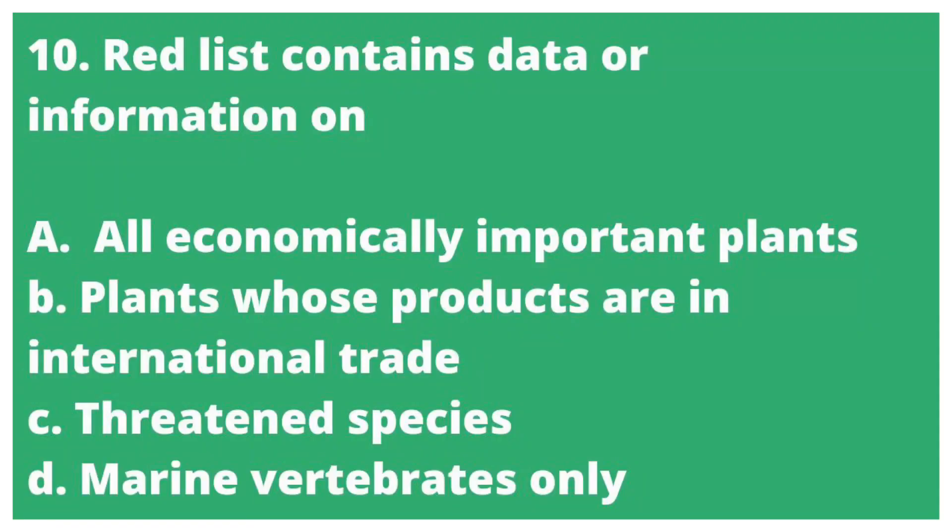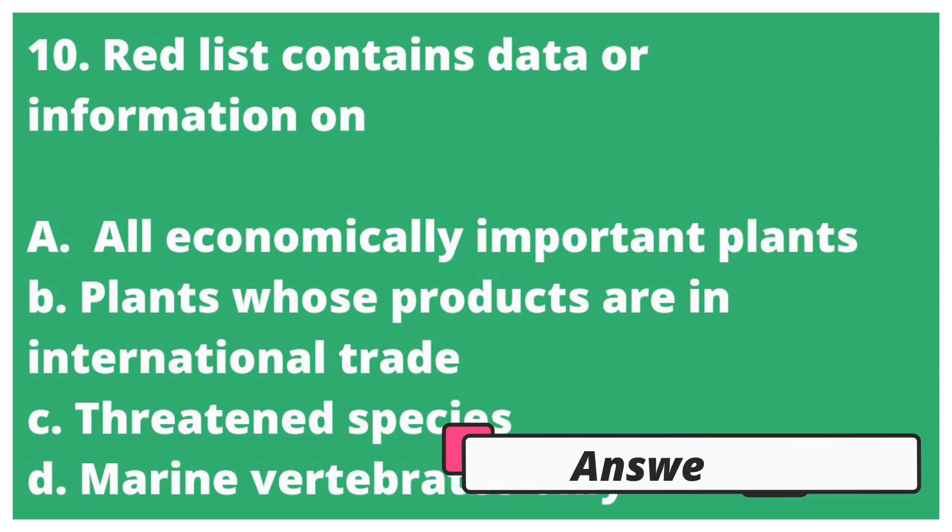Tenth question: Red list contains data or information on? Option A, All economically important plants. Option B, Plants whose products are in international trade. Option C, Threatened species. Option D, Marine vertebrates only. The correct answer is Option C, Threatened species.